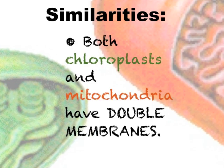Both chloroplasts and mitochondria have double membranes. While many other cellular organelles are enclosed by a single layer membrane, both chloroplasts and mitochondria are enclosed in an envelope of two membranes.